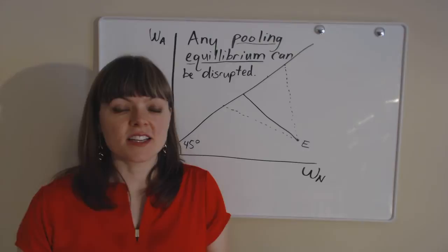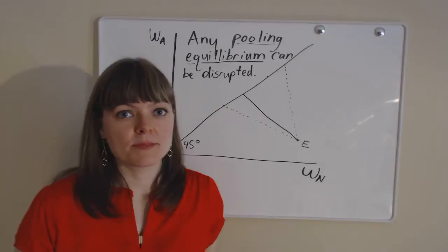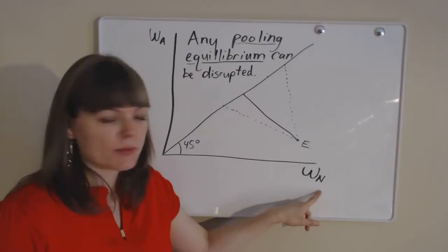I'm going through a proof in the Rothschild and Stiglitz adverse selection model explaining why any pooling equilibrium can always be disrupted by cream skimming.